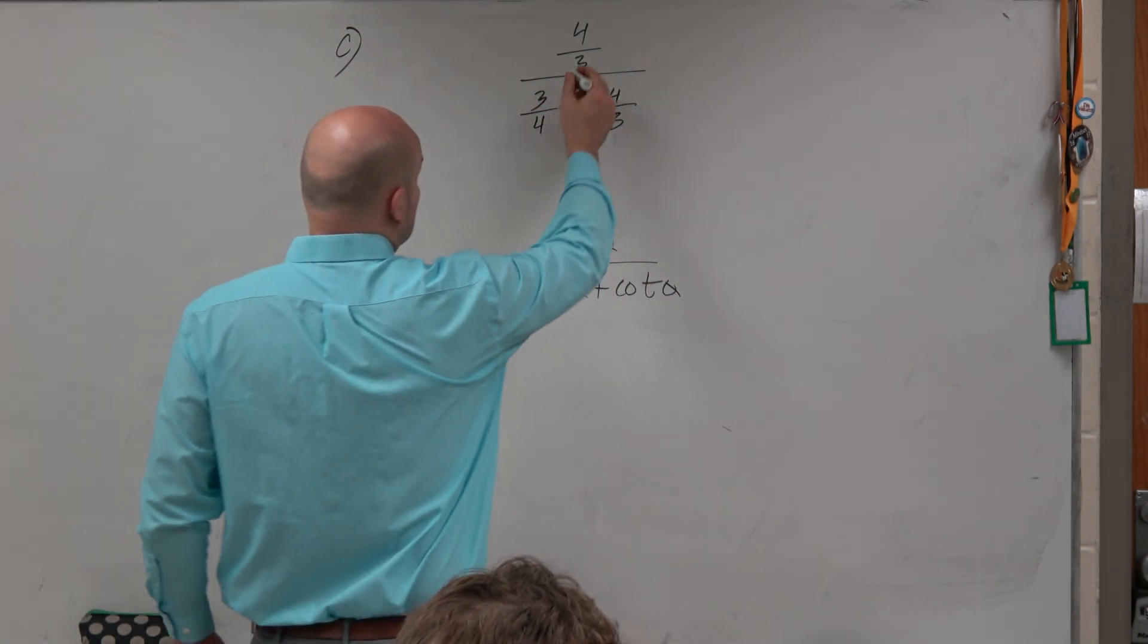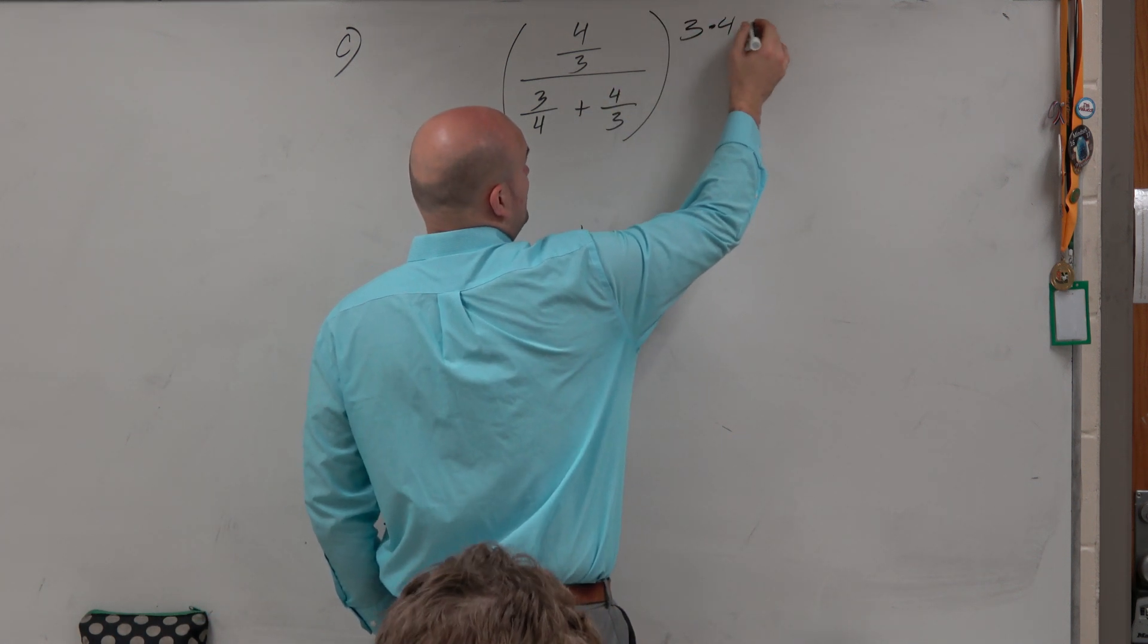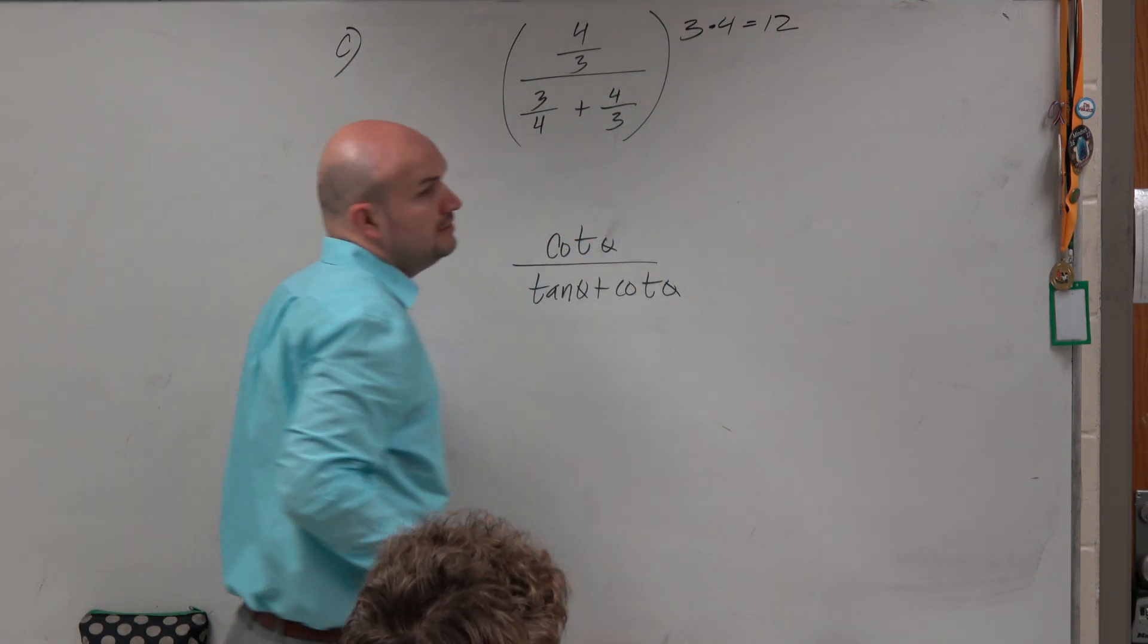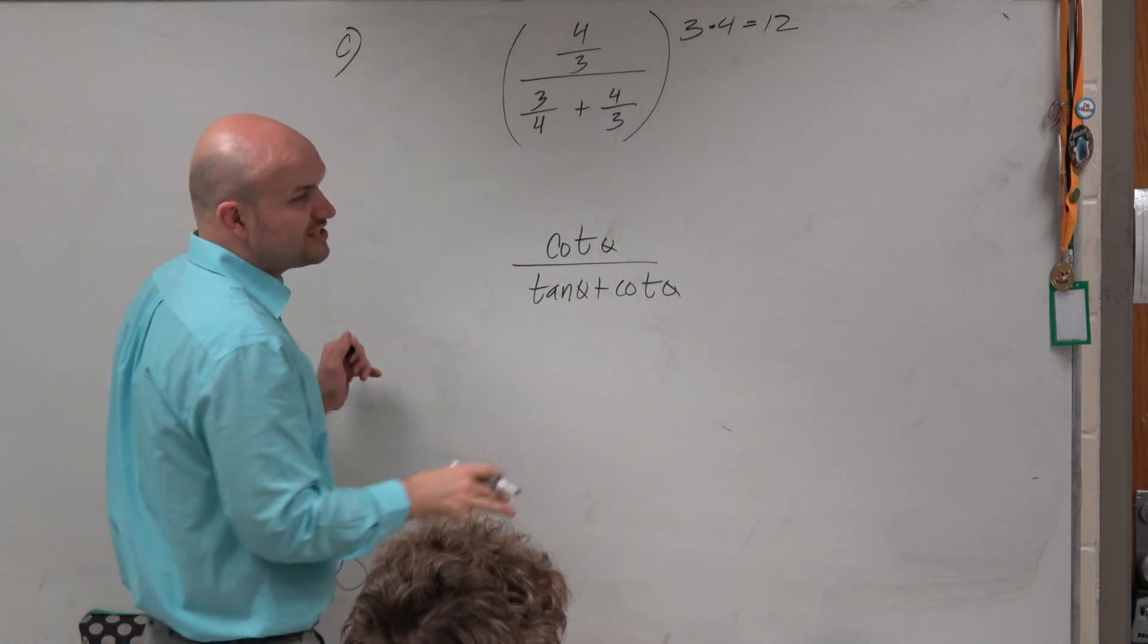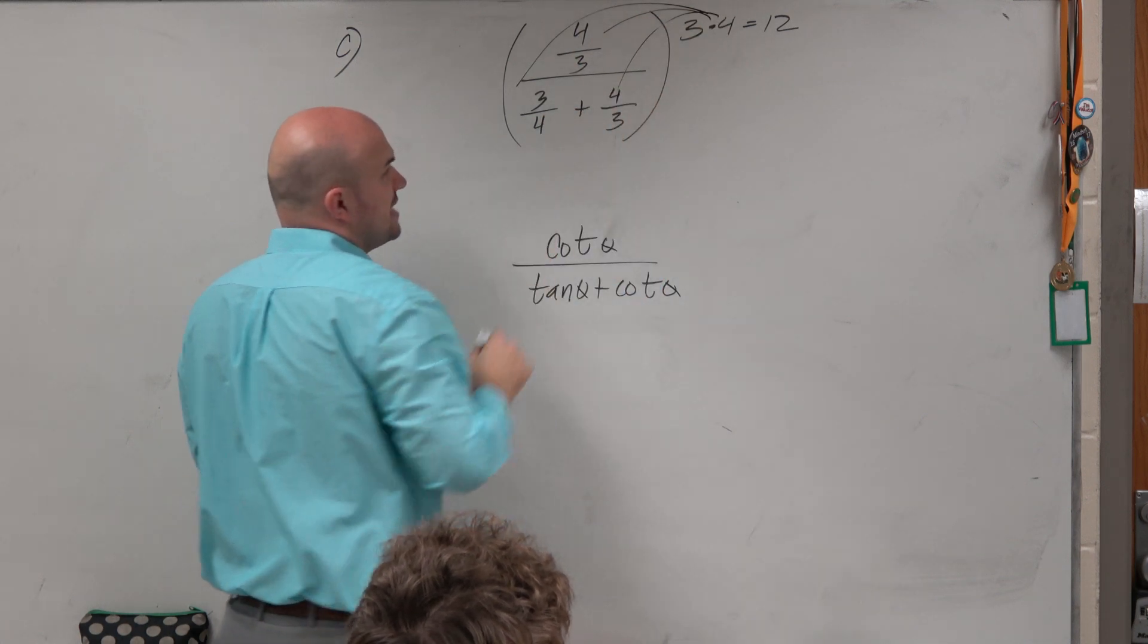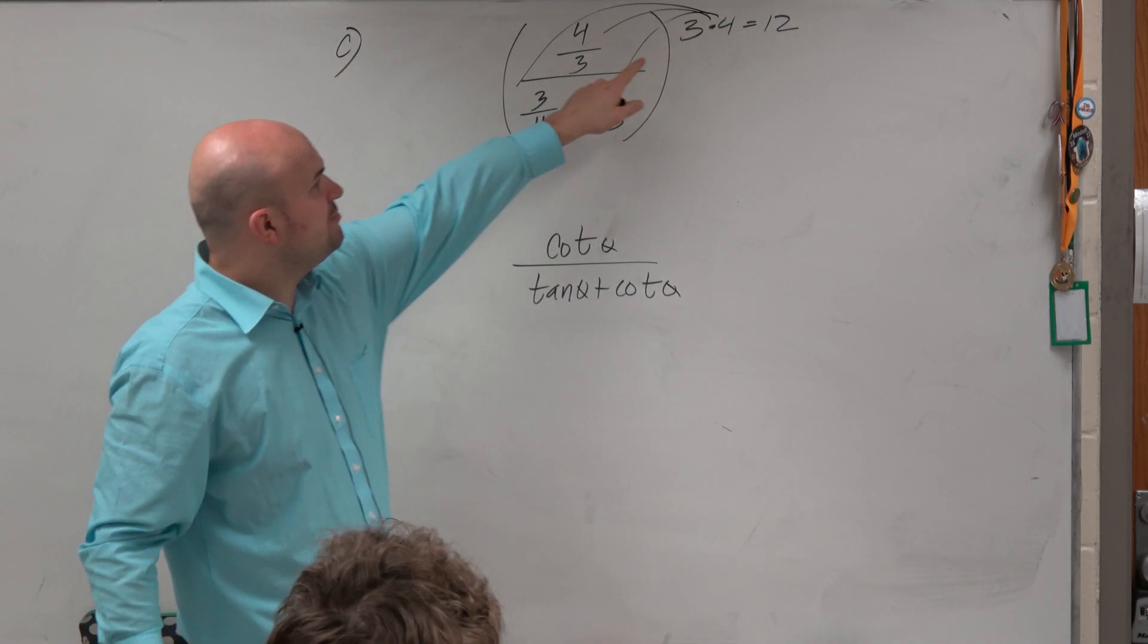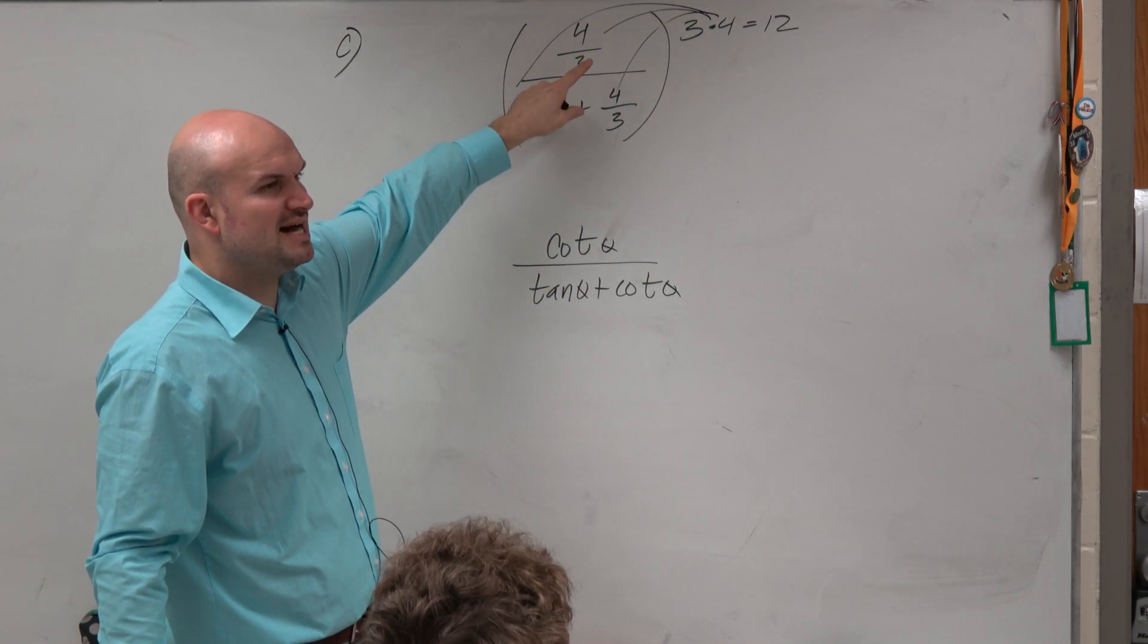In this case, the LCD between 3 and 4 is simply just the product of 3 times 4, right? Now, you can write it as 12 if you want to, but I'm actually going to leave it as broken apart. When you multiply everything times 3 times 4, notice how when you multiply 3 times 4, or 12 times 4 thirds, what divides out? The 3's divide out.